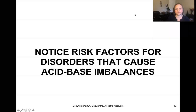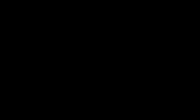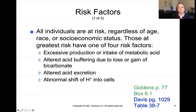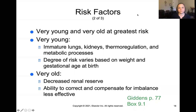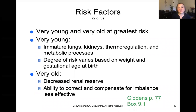There are specific risk factors for disorders that can cause acid-base imbalances, and we should recognize these as red flags. Risk factors relate directly to the causes — any imbalance in acid production or excretion, from a respiratory or metabolic cause. The very young and the very old are most at risk: the young because of immature lungs and metabolic processes, and the elderly because their kidneys don't work as well and they lack the ability to compensate.